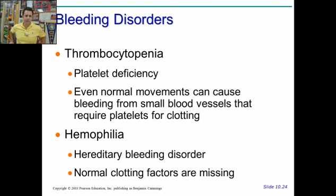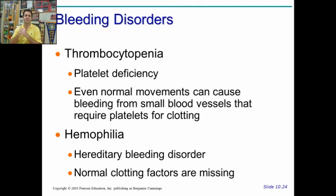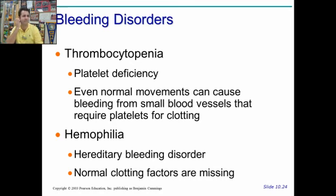There are also certain bleeding disorders. Thrombocytopenia — we see the '-penia' suffix again. Due to platelet deficiency, normal movements can cause tiny bleeds all over because they don't have enough platelets for clotting. A characteristic symptom is little red dots on the skin where there are little patches of bleeding. Hemophilia, which you've probably heard of, is a clotting disorder — it's hereditary. Normal clotting factors are missing, so they can't clot blood. A simple nick from shaving can cause endless bleeding. They often apply chemicals on the outside to promote clotting. Thrombocytopenia will also cause similar bleeding.